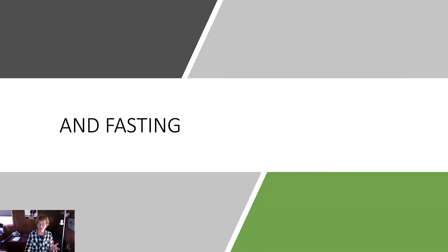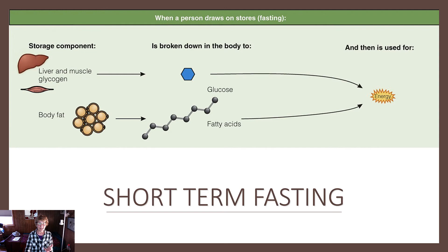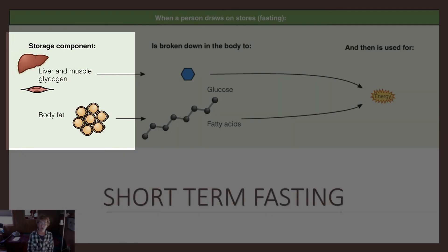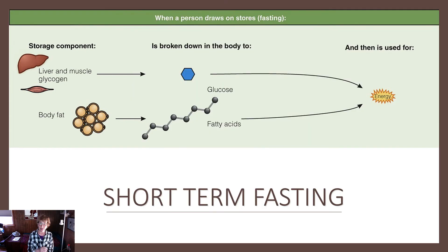The opposite of feasting is fasting. We break fasting down into short-term and long-term fasting. For our purpose, let's say a short-term fast is two to three days, and a long-term fast is seven days. So in a short-term fast, the body will first draw on liver and muscle glycogen stores, and body fat.